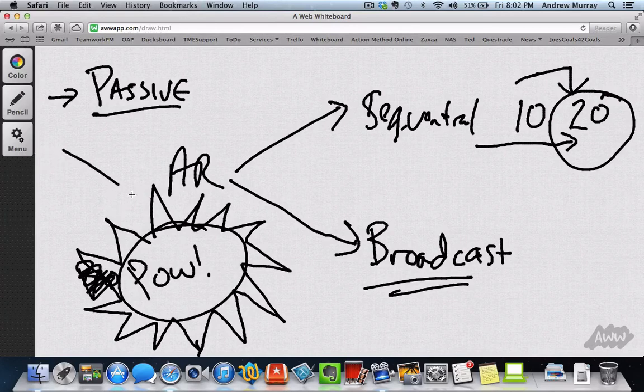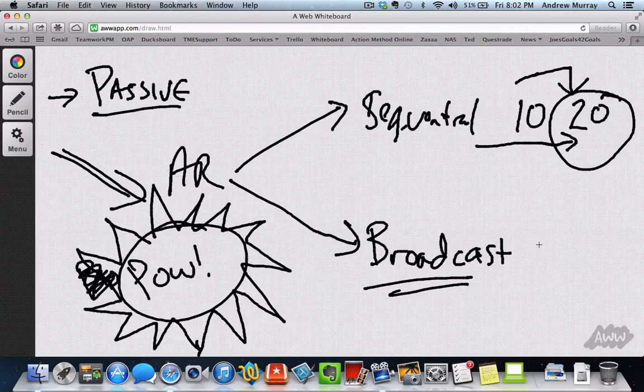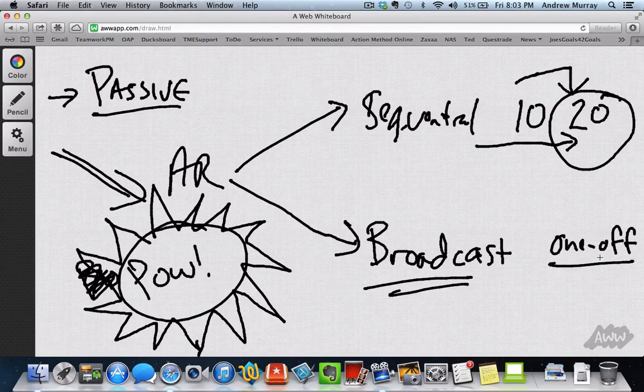Now, the second one broadcast. Basically it's not like the sequential ones where you set it to go out at certain intervals. It's you decide to write an email, you want to send out, you're maybe selling something right now, it's time sensitive and you want to get it out to the people right now. So that's a one-off message.